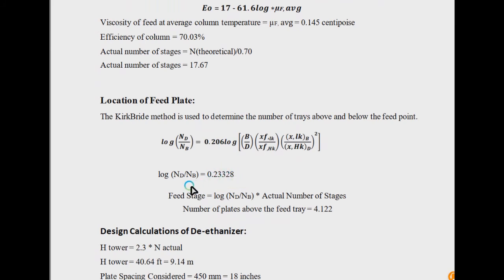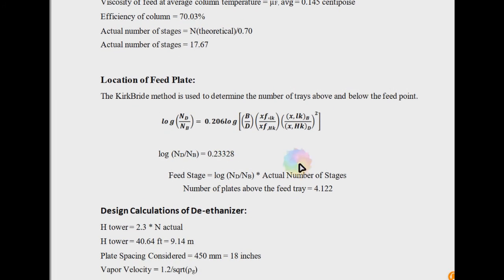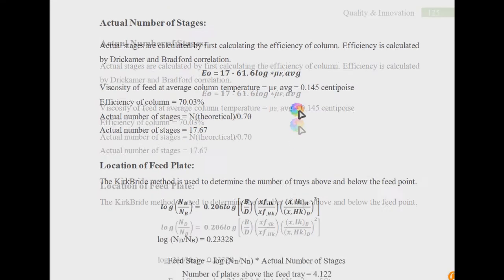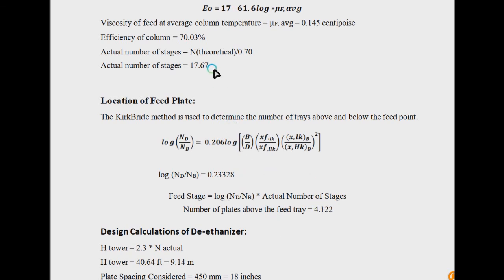A result of 0.223 means the bottom plates are far greater because the ratio is smaller — the distillate plates are 10^0.23328 times the number of bottom plates. Using this relation, the feed stage equals (N_D / N_B_ratio) multiplied by the actual number of stages, giving you the number of plates above the feed tray. In this case, the number of plates above the feed tray comes out to be 4.122, while the total plates are 17.67. So the number of plates below the feed plate is 17.67 − 4.122, which equals approximately 13.5.